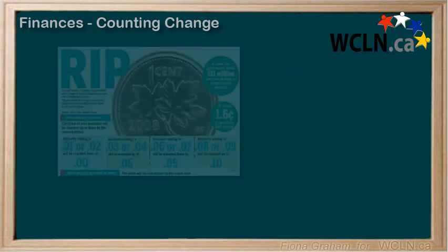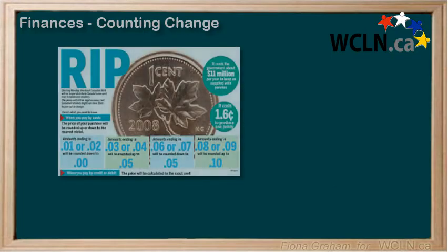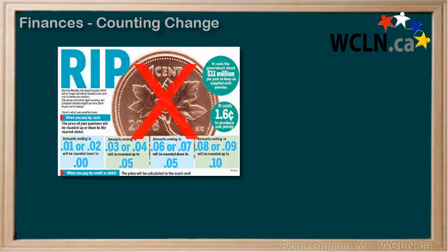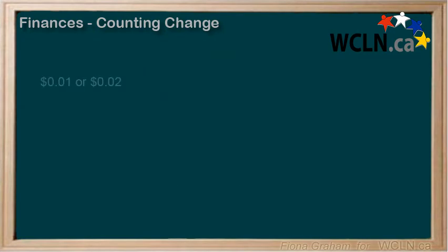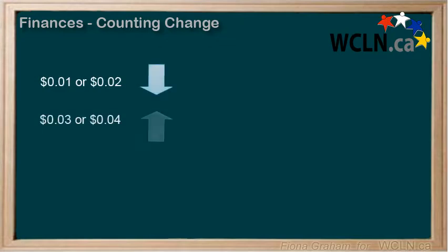It's important to note that in Canada we no longer use pennies, so you must round up or down. If something costs 1 to 2 cents, we round down, but if it costs 3 to 4 cents, we round up.